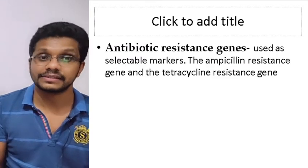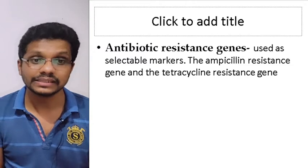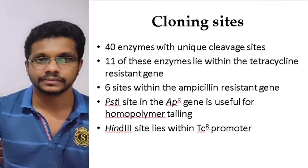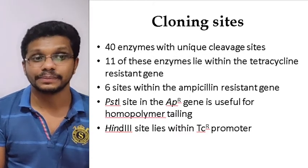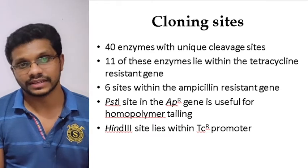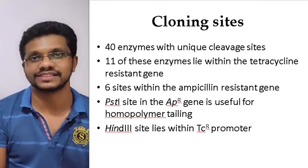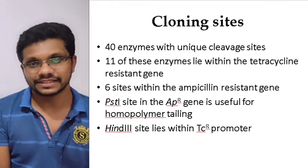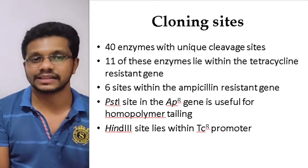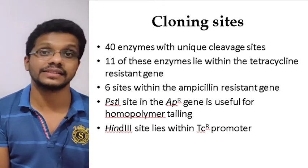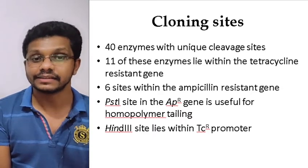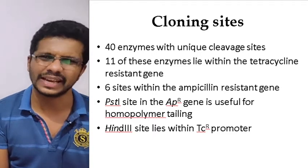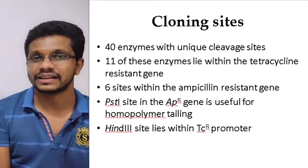It has antibiotic-resistant genes — as mentioned, these act as selectable markers. PBR322 has the ampicillin-resistant gene as well as the tetracycline-resistant gene. It has cloning sites. Although I showed only three cloning sites in the previous figure, it actually has 40 different unique restriction endonuclease recognition sites. Out of these 40, 11 are in the tetracycline gene and 6 are in the ampicillin-resistant gene. The PstI site in the ampicillin-resistant gene can be used for homopolymeric tailing, and HindIII is actually in the promoter of the tetracycline-resistant gene, so it can be used for expression vector applications.